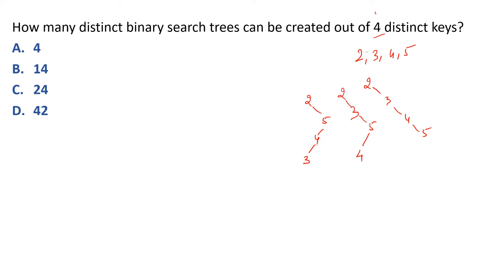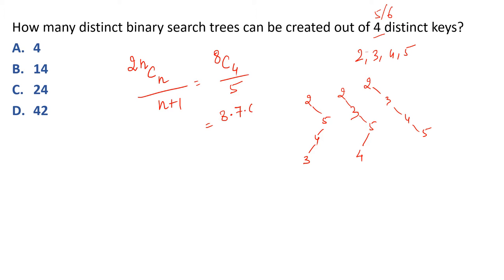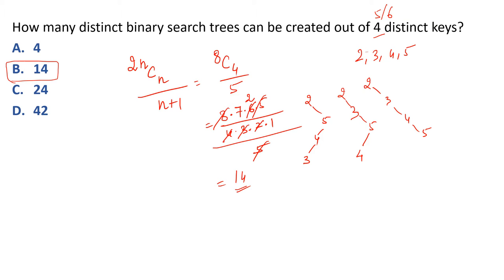Agar hum 4 ko 5 kar dein toh aur bhi mushkil ho jayega, 5 ko 6 kar dein toh aur bhi. Iske liye ek direct formula hai: 2nCn divided by (n+1). Isse apply karein — n=4 ke liye: 8C4 upon 5. Yeh expand hota hai: (8×7×6×5)/(4×3×2×1) divided by 5. Simplify karne par answer aata hai 14. Toh jabbi aisa koi question aaye, direct formula apply karke total number of trees find kar sakte ho.